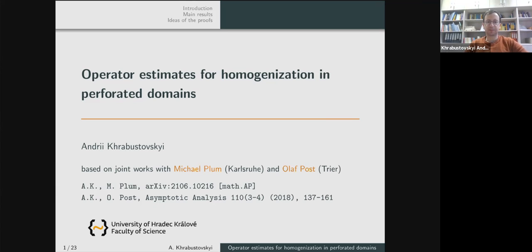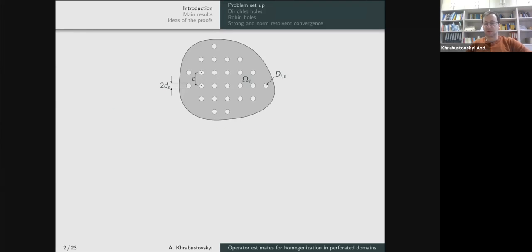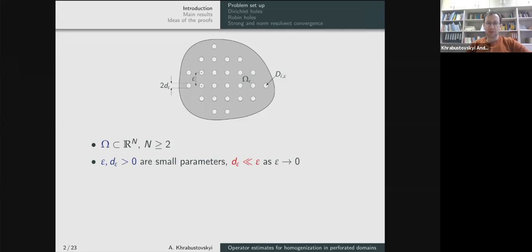Let me start with the introduction. I would like to introduce the class of problems we're interested in — this is quite an old problem with a long history, one of the most influential problems in homogenization theory. We consider the domain omega, which we do not suppose to be bounded or unbounded. We perforate omega, which means we make a lot of small holes in this domain.